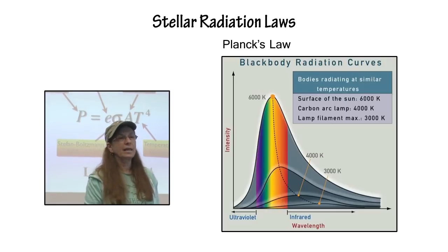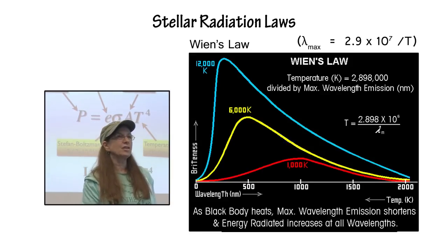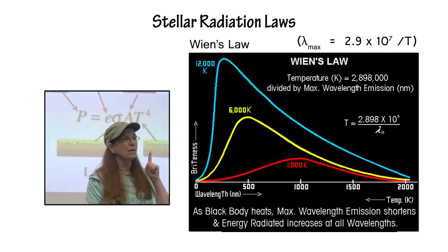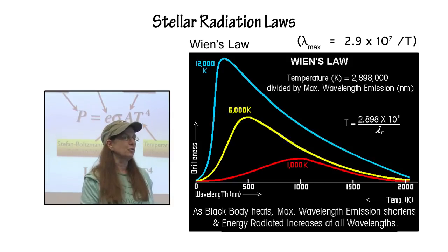The radiation laws that we have every year: Planck's law, which basically says that a hotter star emits more radiation at every wavelength than a cooler star. Wien's law basically says that every star emits radiation with most of its radiation at the maximum wavelength and that that is equal to 2.9 times 10 to the 7 divided by T.